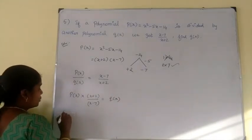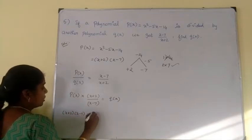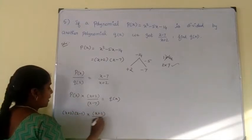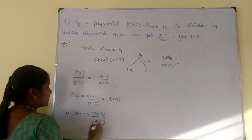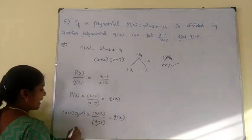Now if P of x, we'll substitute. So P of x is x plus 2 into x minus 7, into x plus 2 divided by x minus 7 is equal to Q of x. So x minus 7, x minus 7 gets cancelled.